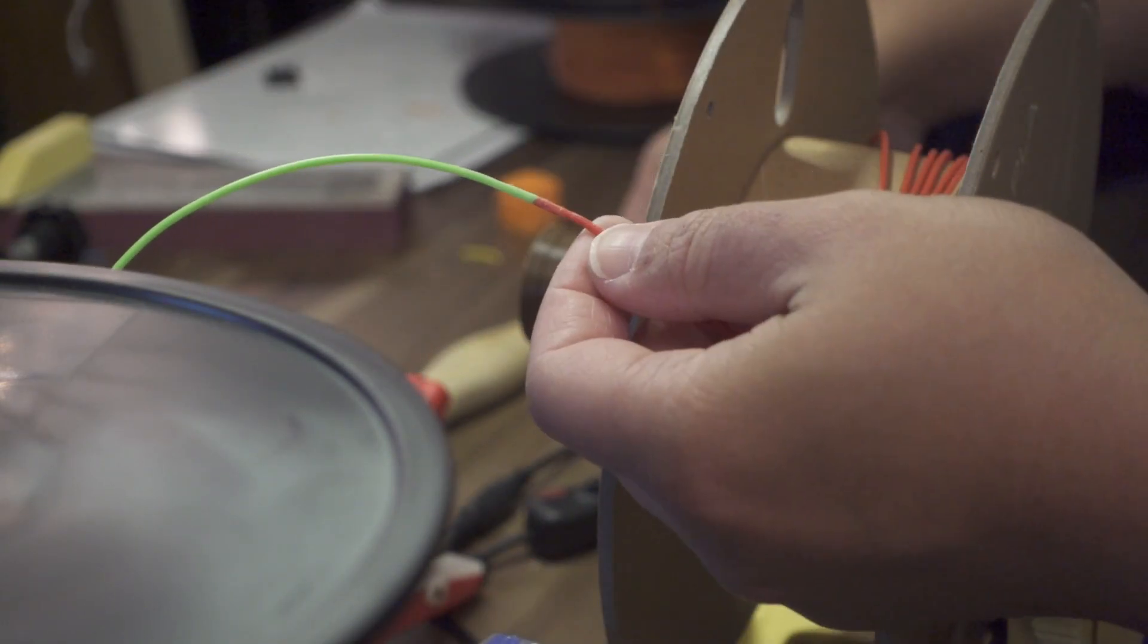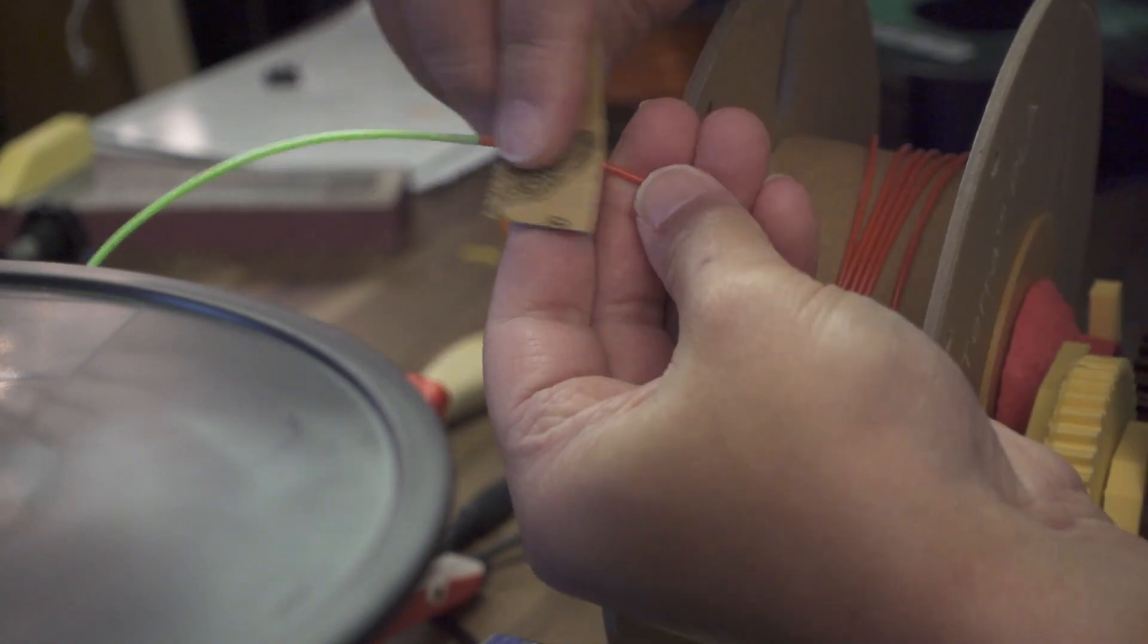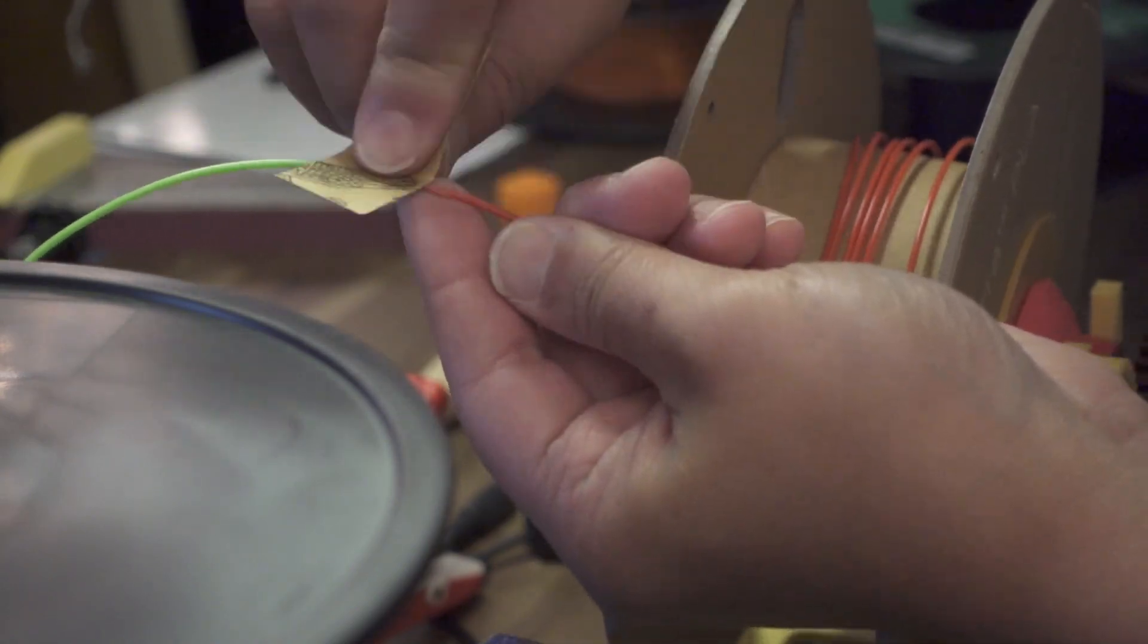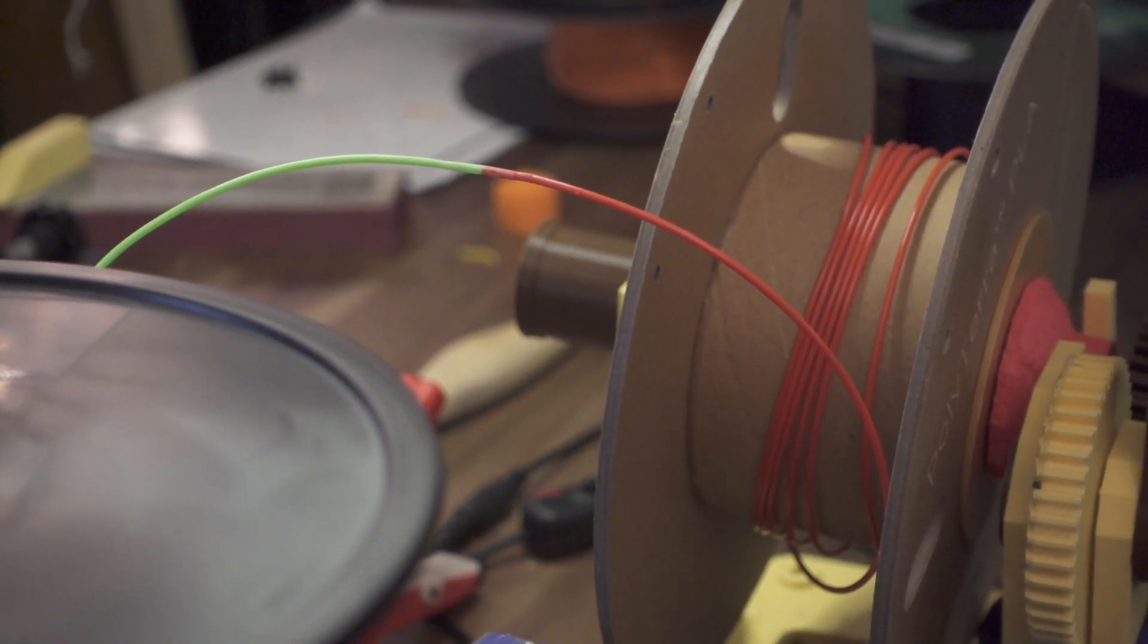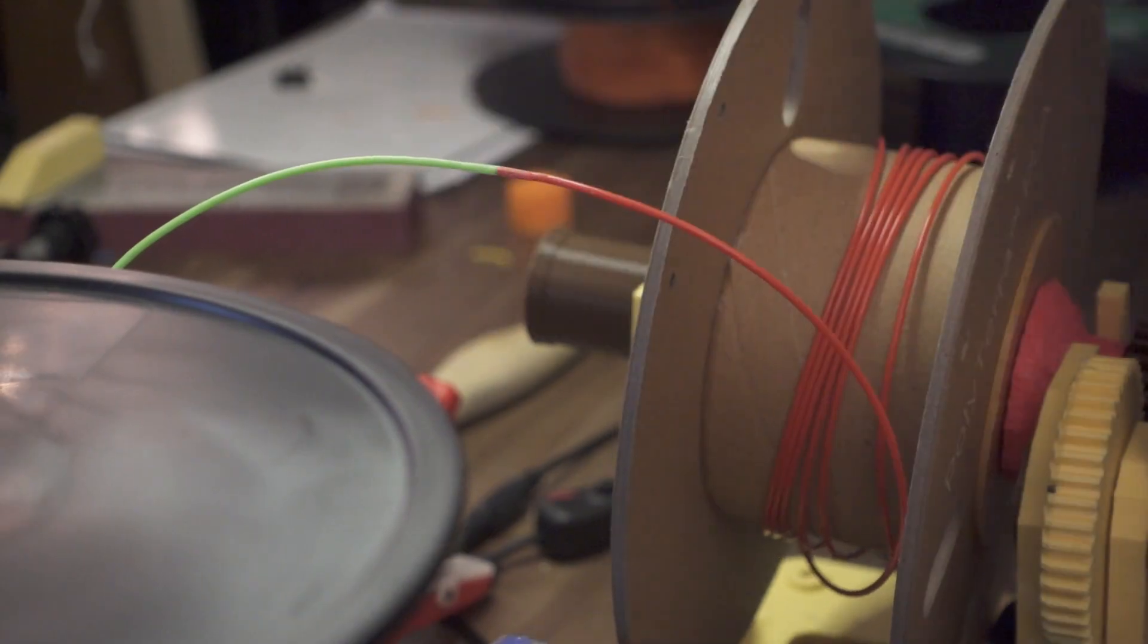This is pretty important that you get this right, to the right diameter of sorts, or within acceptable margins. Because if the filament is too thick where you spliced it, it will get jammed in your Bowden tube.